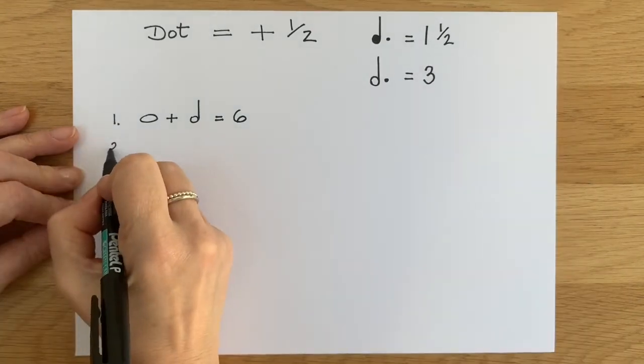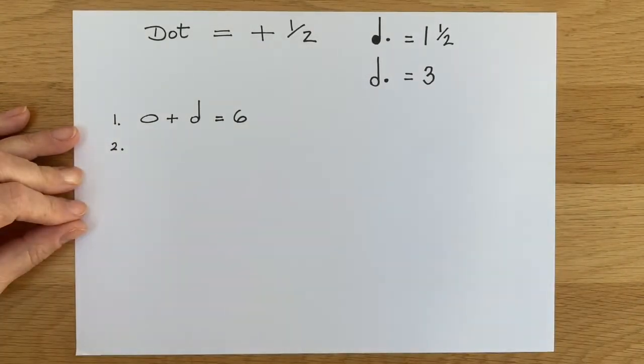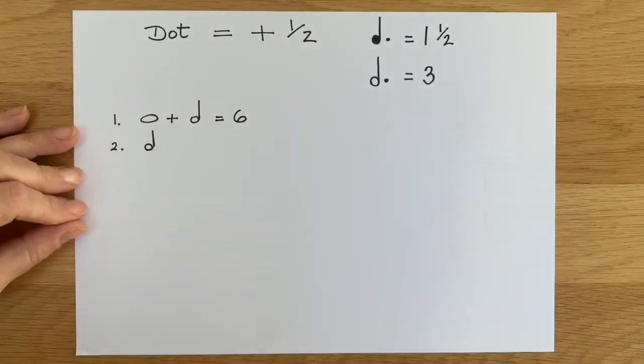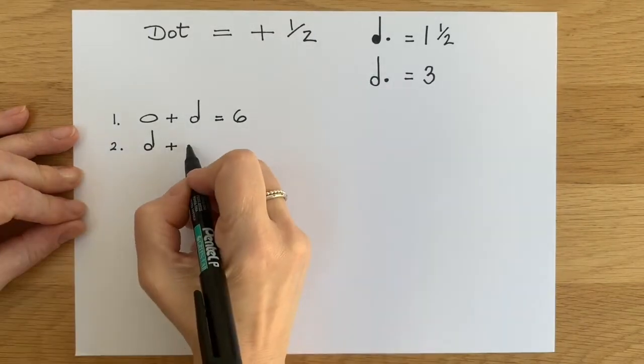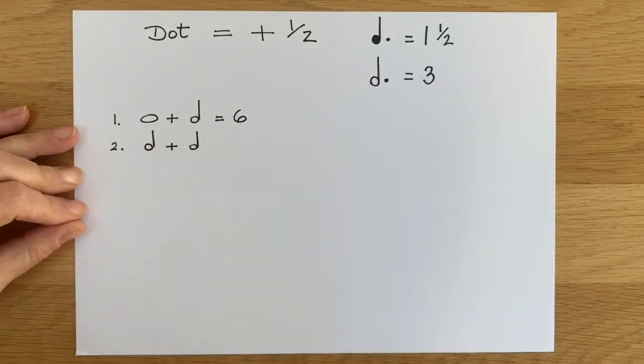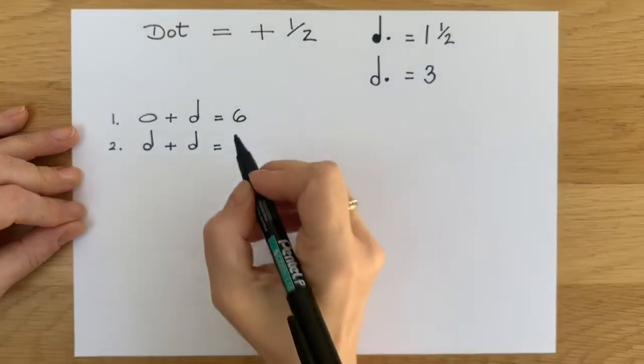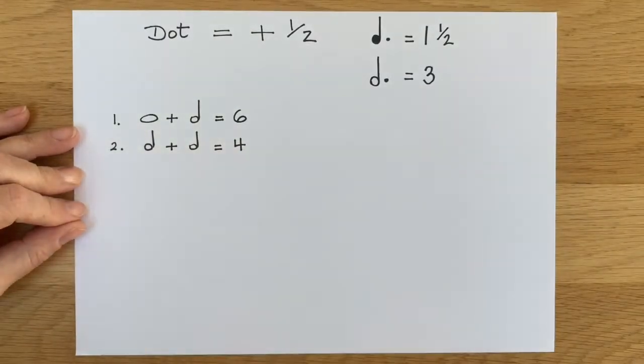Number two. If you had a minim followed by another minim. Remember they're both worth two beats, aren't they? What would that be in total? Good, you got it right. It's four.